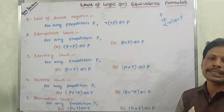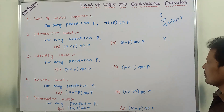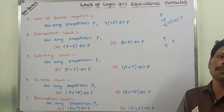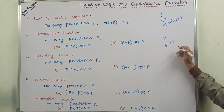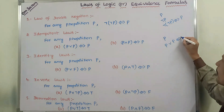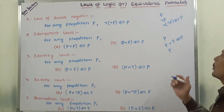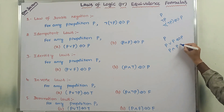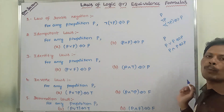The second one is the idempotent law. We are taking proposition P and the same proposition again. In between them we use the OR connective. That means P or P is always logically equivalent to P. This law is called the idempotent law.